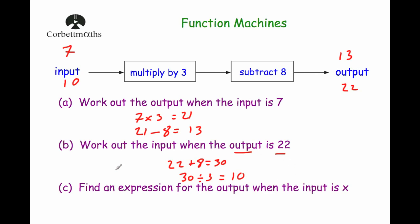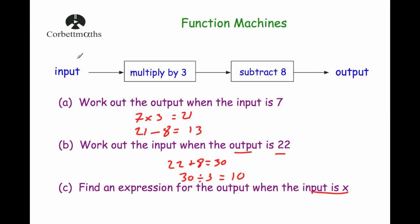Now there's a bit of algebra: find an expression for the output when the input is x. These are straightforward — you just write down the expressions. Input is x. Multiply by 3: x times 3 is 3x (the number goes at the front in algebra). Then subtract 8: 3x subtract 8 is just 3x minus 8. So the expression for the output is 3x minus 8.